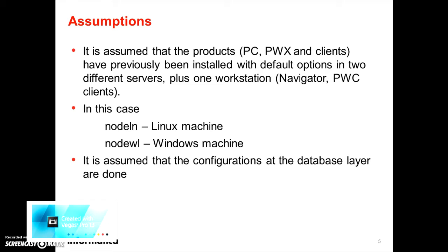In this case, node LN would be the listener node name running on the Linux machine and node WL would be the listener node name running on the Windows machine. It is also assumed that the configurations at the database level are done and the required privileges are granted.